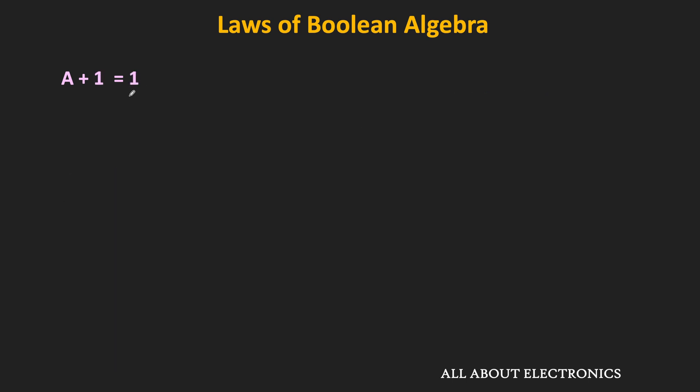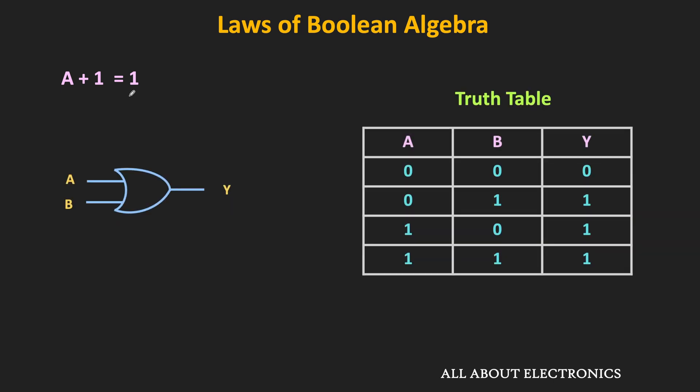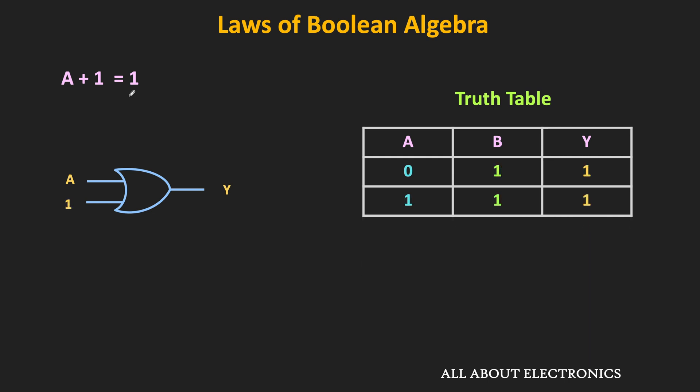The next law is a + 1 = 1, meaning the OR operation of a and logic 1 is always equal to 1. From the truth table of the two-input OR gate, one input is always set to 1. For the OR gate, when one of the inputs is 1, the output is always equal to 1. Therefore, irrespective of the value of a, the output y will always remain 1, meaning a + 1 = 1.